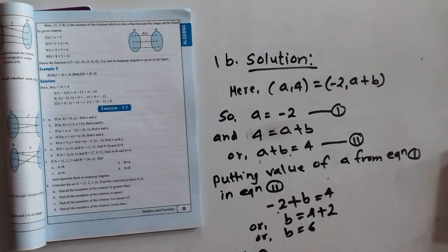Therefore b is equal to 6. Therefore a is equal to minus 2, b is equal to 6. This is our answer.